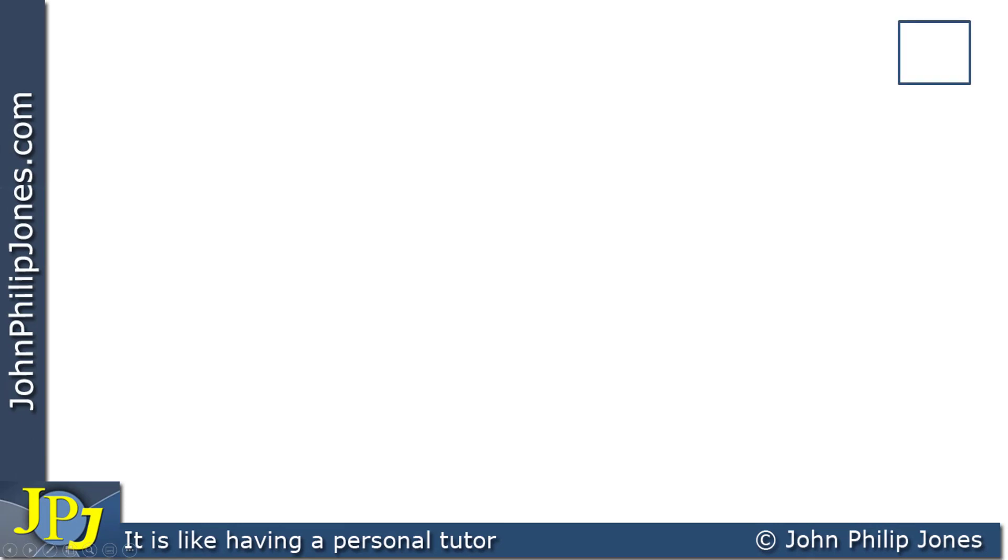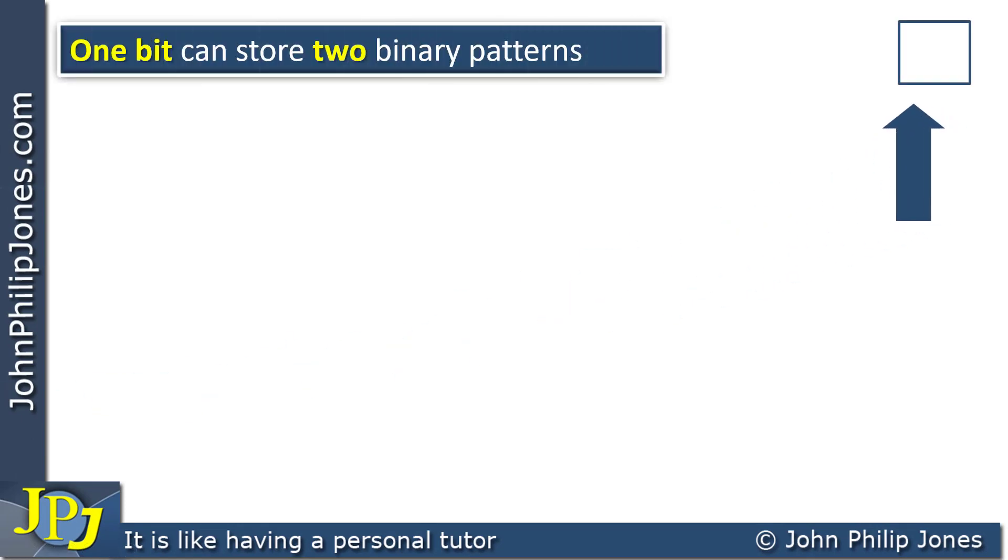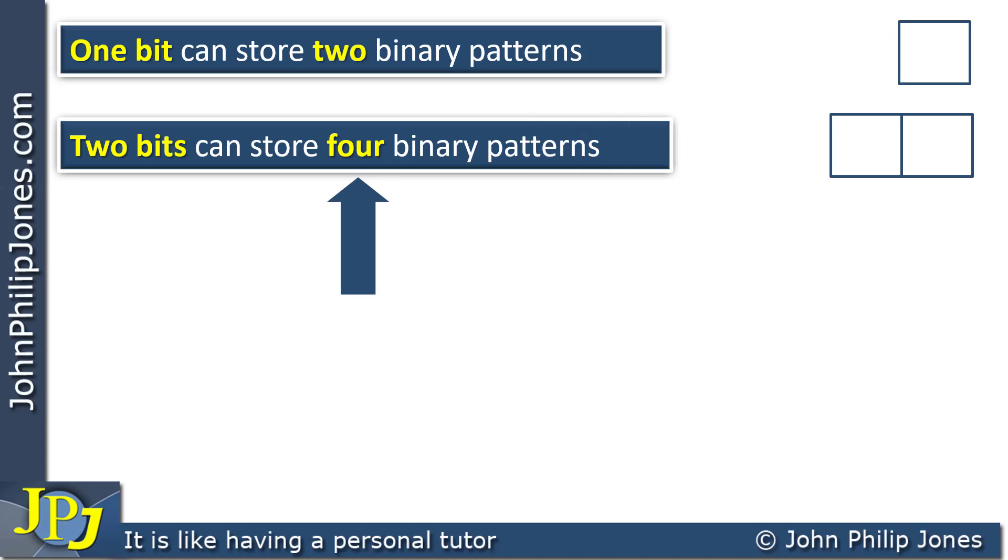Let's consider the case when we have one flip-flop. What we know is one bit can store two binary patterns. They can be a zero or a one. When we take the one flip-flop and we add another, so we now have the possibility of having two bit patterns, the number of patterns you can get is four.